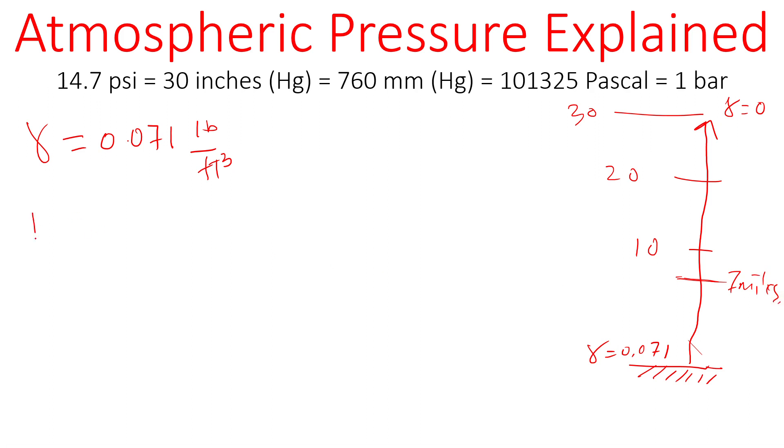So if you apply that formula P equals gamma H to calculate the pressure right here at the ground at sea level coming from all this air above us, we know that the specific weight is not the same. It's going to go down as you go up. However, just a quick rough estimation - let's say we got seven miles of air on top of us.